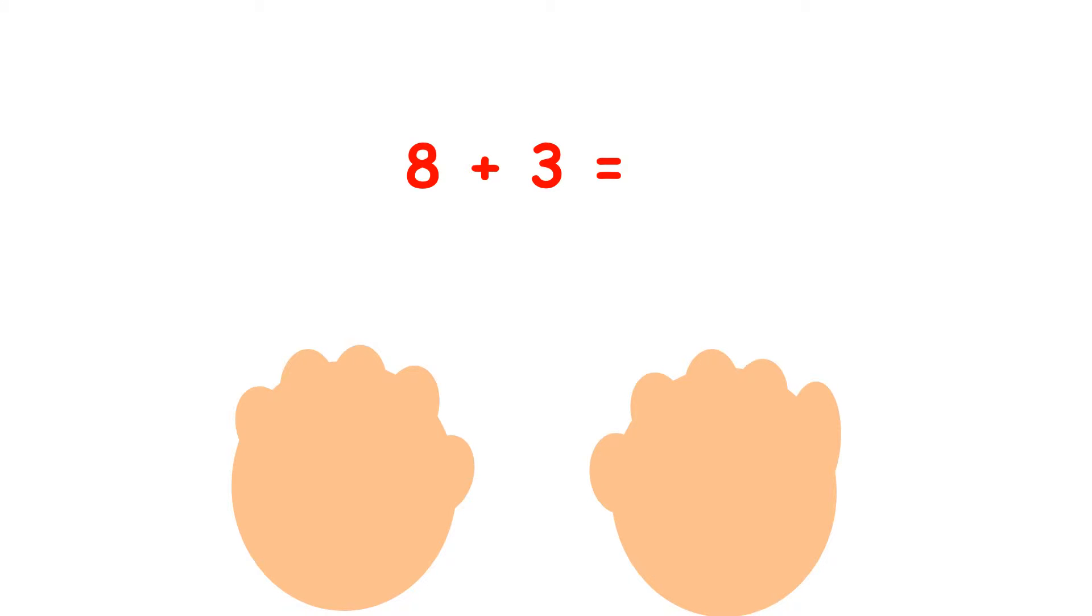So here we've got 8 plus 3. So I'm going to count on from 8 on my fingers and then stop when I've held up 3 fingers. So we start on 8 and let's count on 9, 10, 11. And that's 3 fingers so I'm going to stop at 11 and write down my answer.